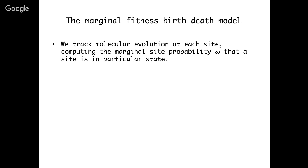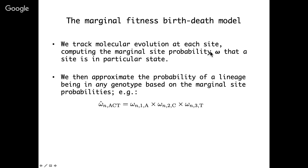Under this model, we track molecular evolution at each site by computing the marginal site probability omega — the probability that a particular site is in a particular state or genotype, which could be a nucleotide or amino acid. Once we have those site probabilities, we can approximate the probability of a lineage being in a particular genotype. For example, to approximate the probability that lineage N has genotype ACT, we multiply together the probability of being in state A at site 1, C at site 2, and T at site 3.